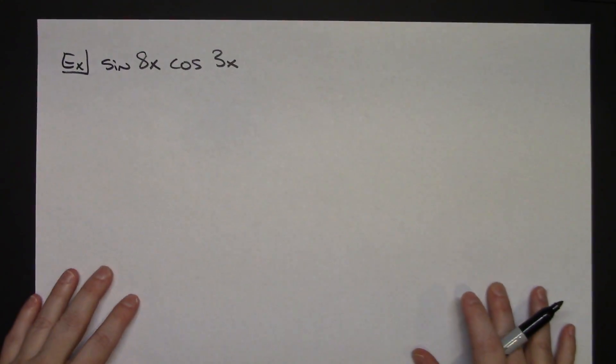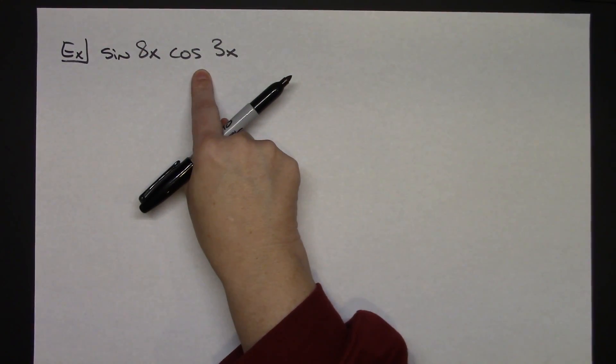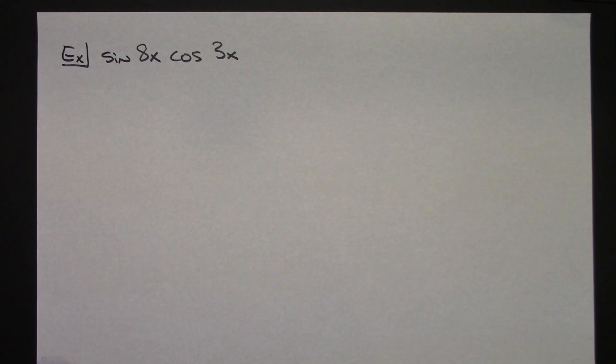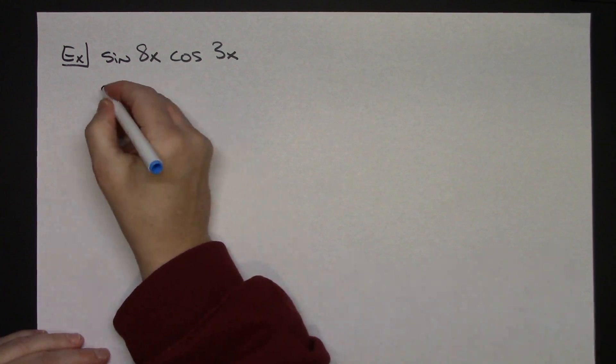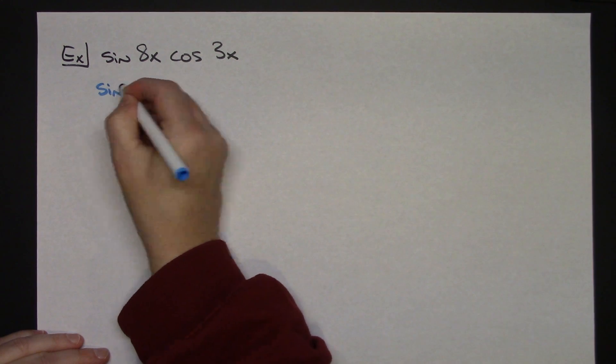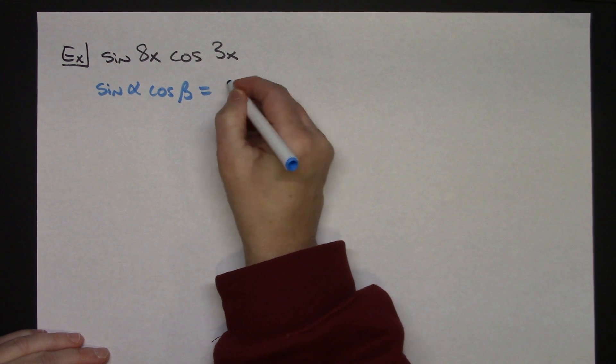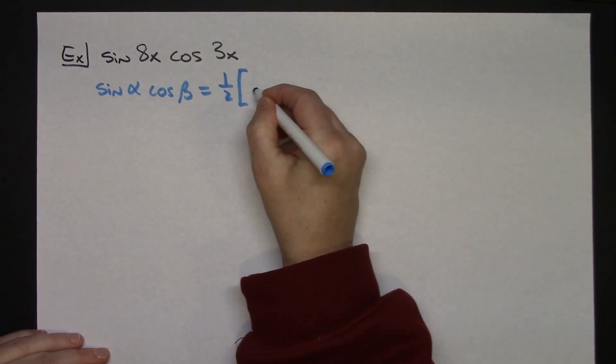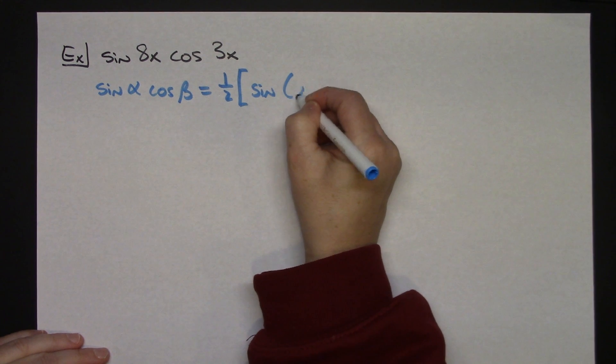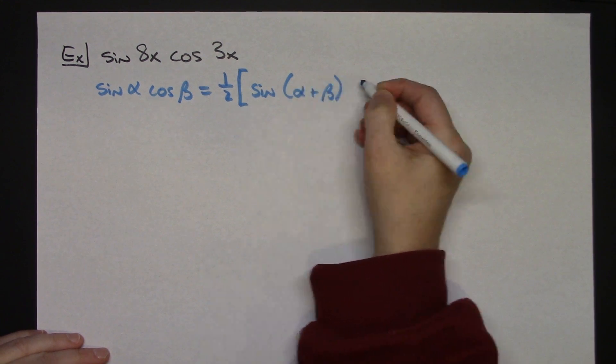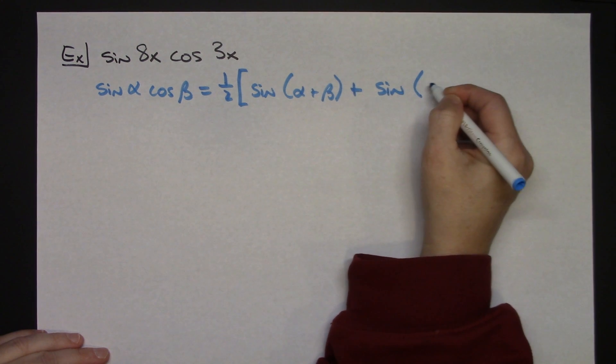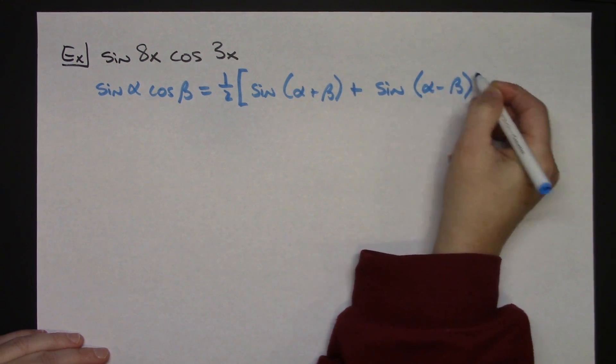Now I would like to do one more example going the other direction. This one is a product and I'm going to turn this one into a sum. So for starters, let's write the formula down that you would have gotten from the very first beginning part of the video. So if I've got a sine alpha cosine beta, the formula for that is 1 half times the quantity sine alpha plus beta plus sine alpha minus beta.